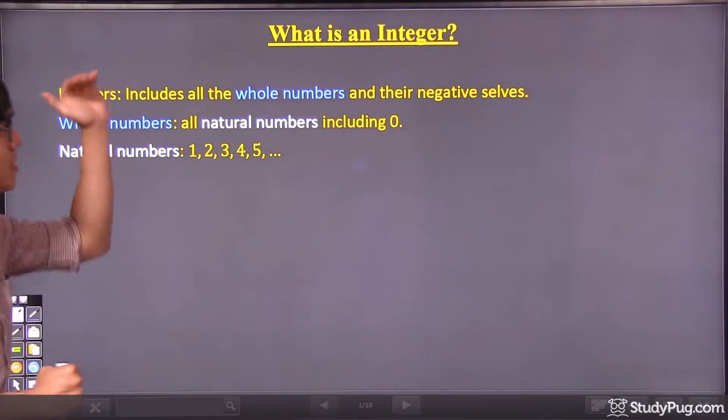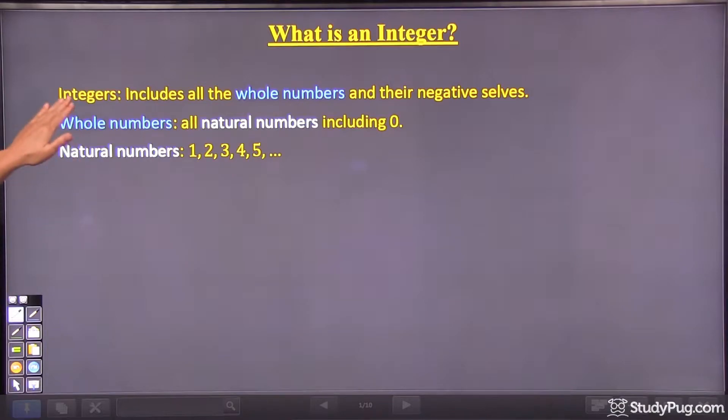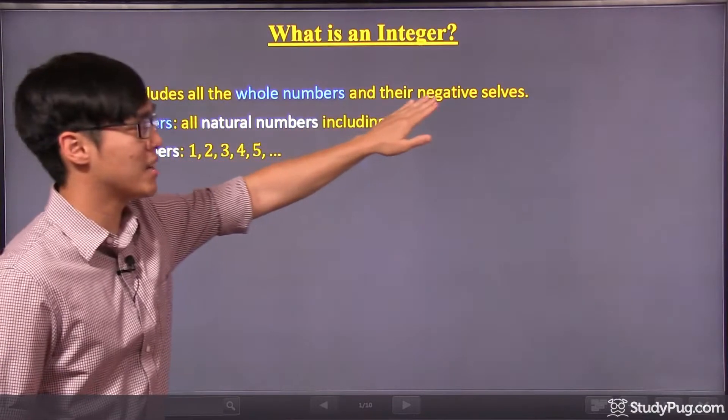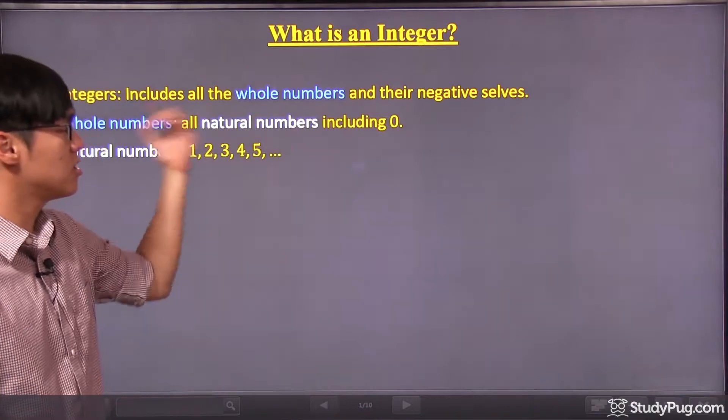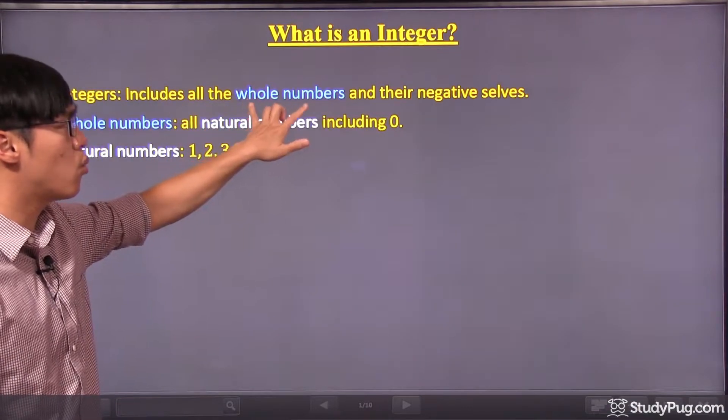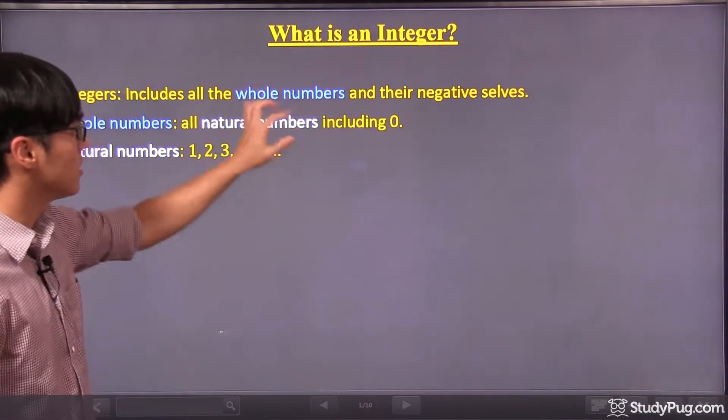So what is an integer? By definition, integers include all the whole numbers and their negative selves. So this is the definition, but we need to know what whole numbers are. So let's define that.